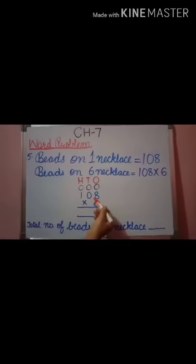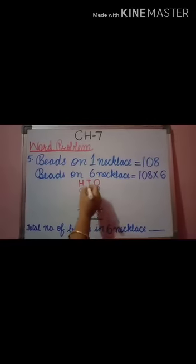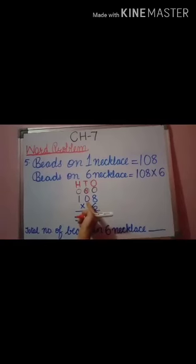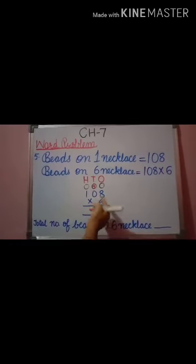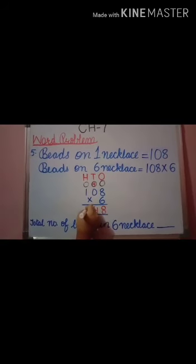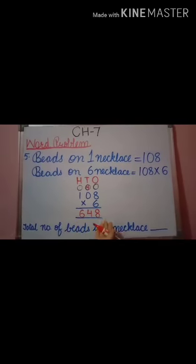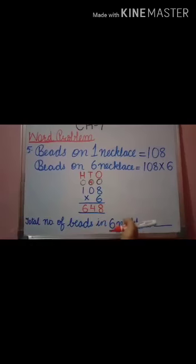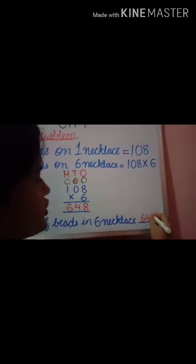6 times 8 is 48. 8 is here and carry 4. 6 times 0 is 0, plus 4 is 4, so 4 is here. 6 times 1 is 6. So the answer is 648. Total number of beads in six necklaces is 648.